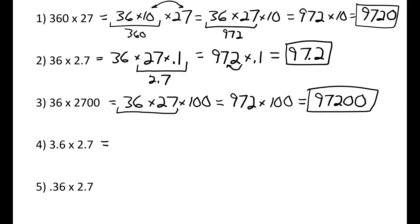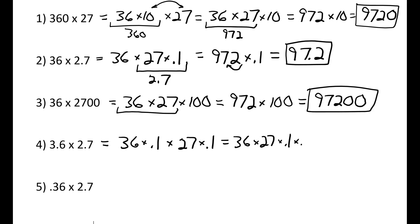Number four is 3.6 times 2.7. I can write 3.6 as 36 times 0.1, and 2.7 as 27 times 0.1. Using the commutative property, this becomes 36 times 27 times 0.1 times 0.1. Since 36 times 27 equals 972, and 0.1 times 0.1 equals 0.01, I move the decimal point two places to the left, which gives me 9.72.